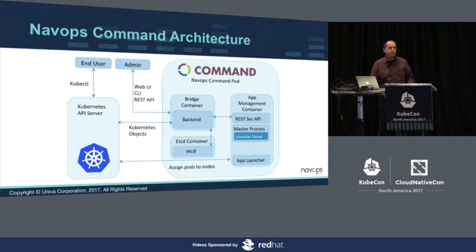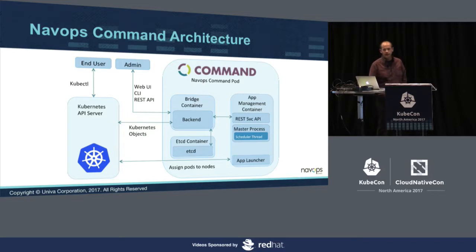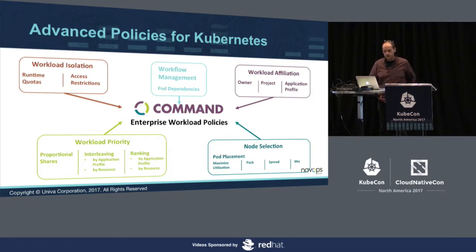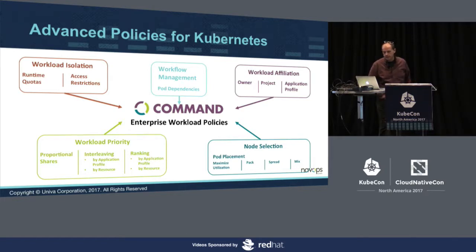For the administrator, there is an additional set of interfaces if you want to configure the policy, but that's only for policy configuration — we have a REST API, web UI, and also a CLI. The types of policies we provide include things like workload isolation — for instance, runtime quotas or access restrictions — and workflow management, which I've already mentioned. We can affiliate workloads with things like owners, projects, and application profiles, and inflict policy on workloads that have a certain affiliation.